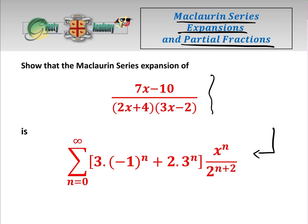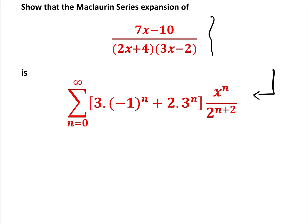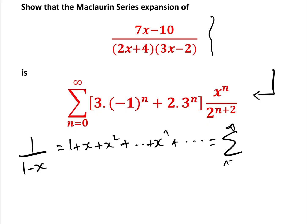Basically, whenever you see anything like a partial fraction, we know that we are going to be dealing with 1 over 1 minus x, which equals 1 + x + x² + ... + x^n + ad infinitum, which equals the sum from n equals 0 to infinity of x to the n. We know we're going to be dealing with that or a variety of that.